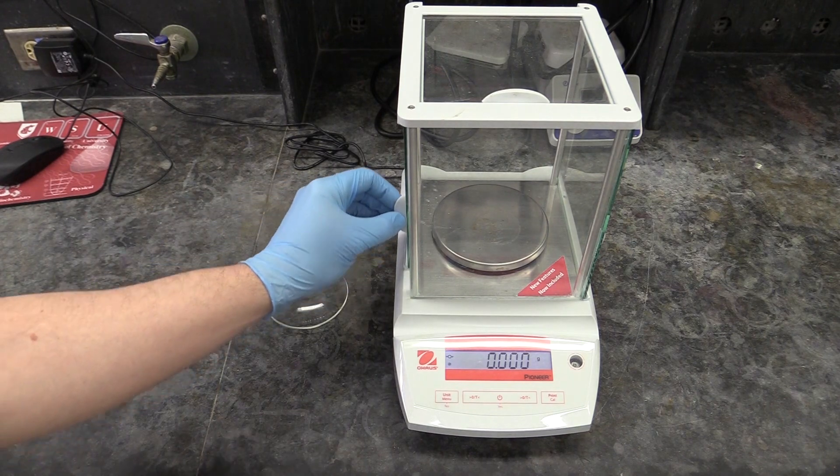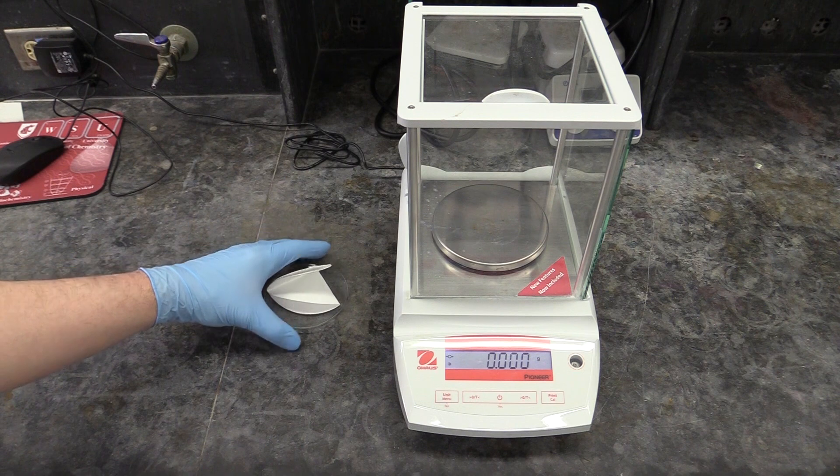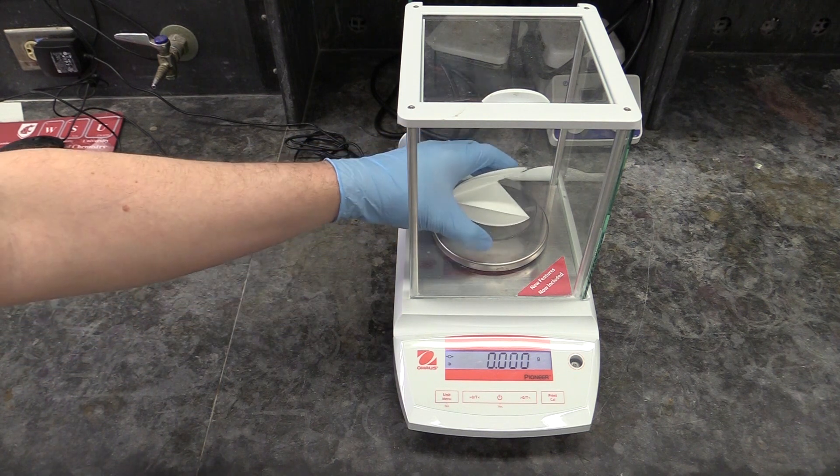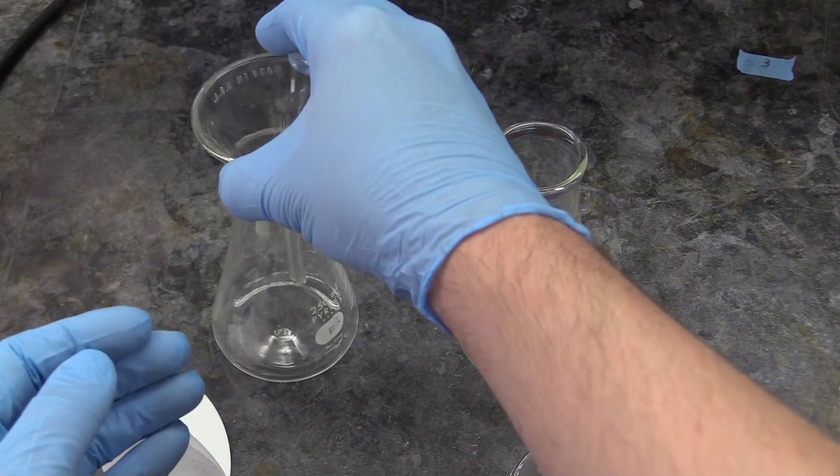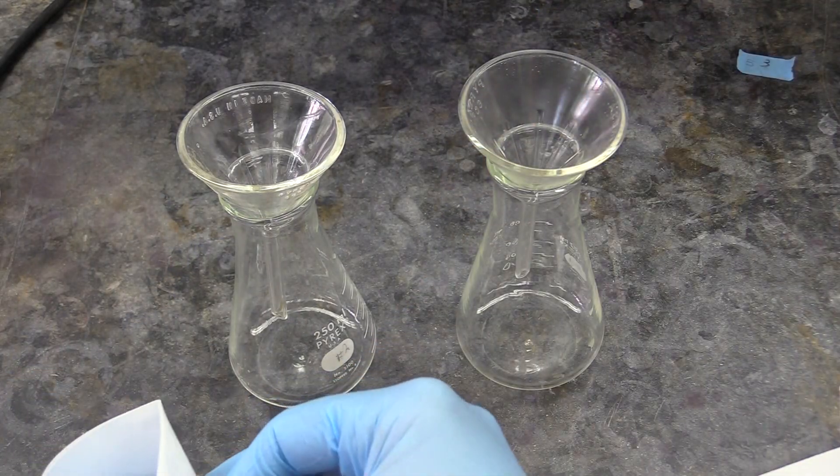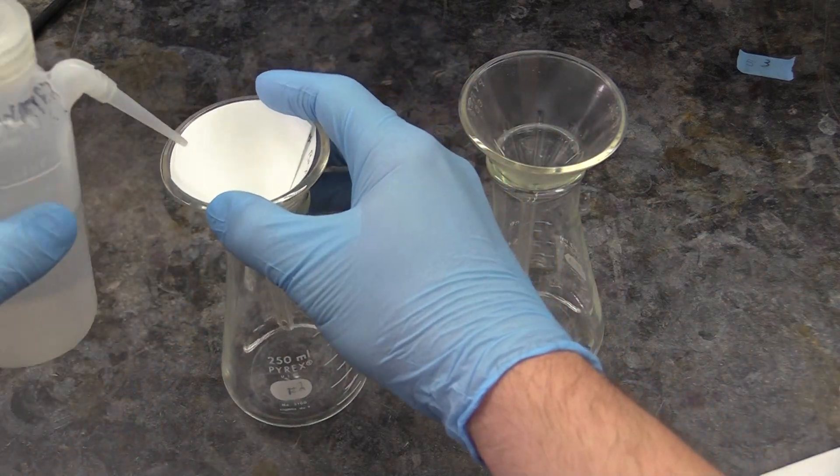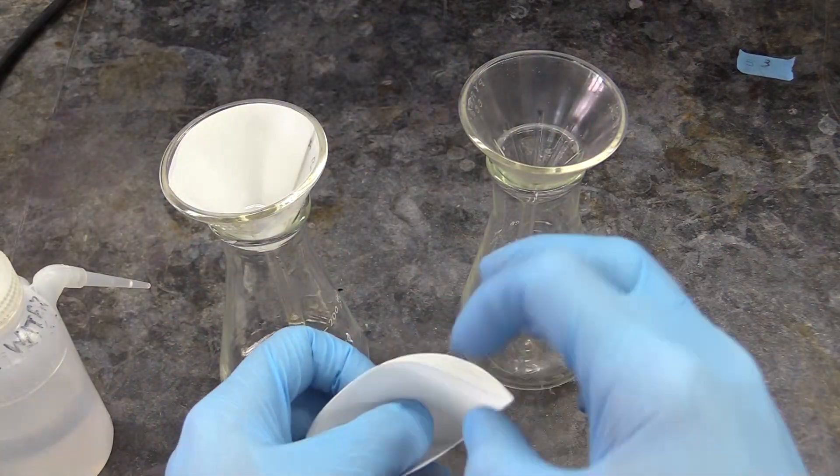Once the papers are folded, you'll need to weigh each one, but for reasons that will become apparent later, you don't want to weigh them by themselves. Instead, put each one on a watch glass and weigh the glass and paper together. Once you've got the papers weighed, put them into funnels and Erlenmeyer flasks, again making sure you know which funnel goes with which paper. Finally, give each paper a squirt with your wash bottle to help them stick to their funnels.